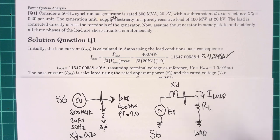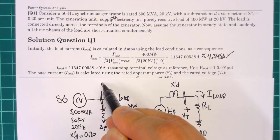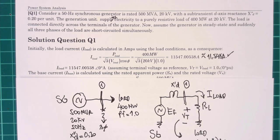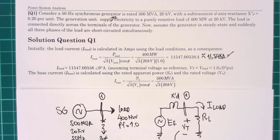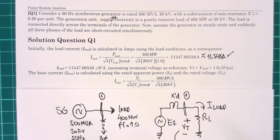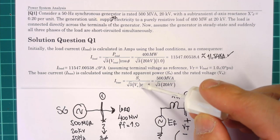The terminal voltage at bus bar number one, prior to the fault, is equal to 1 per unit at 0 degrees. Next, we calculate the base current using the rated power of the generator: 500 MVA divided by (√3 × 20 kV). Note that we do not need the power factor here.